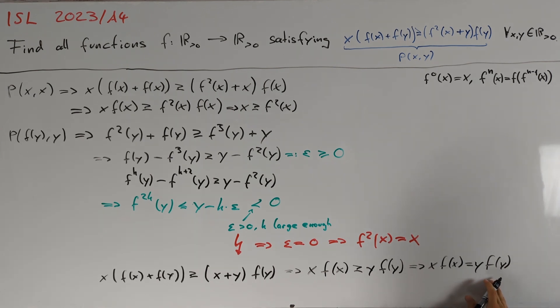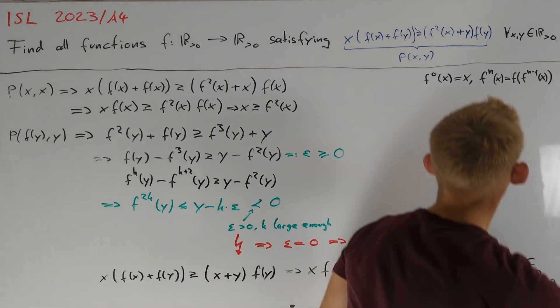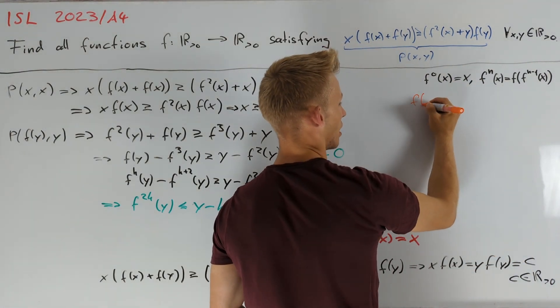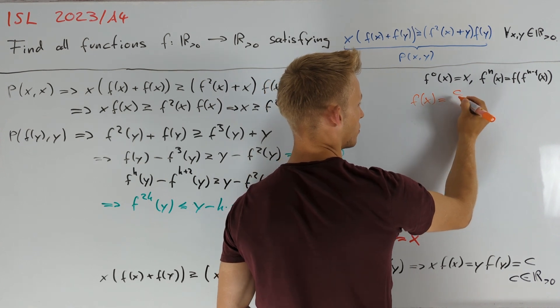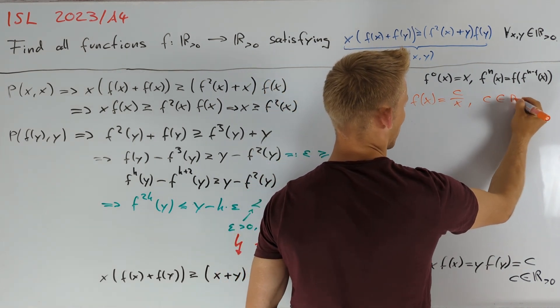And since this holds for all positive real numbers x and y, we know that this is equal to a positive real constant c. We conclude that all possible solutions are f(x) equal to c divided by x for some c in R₊.